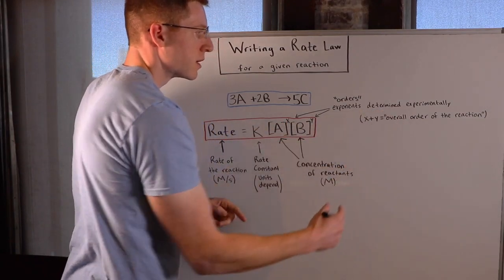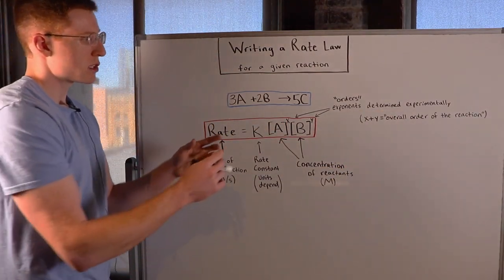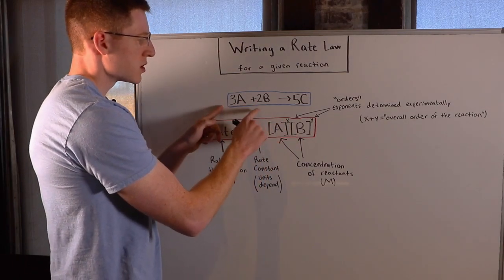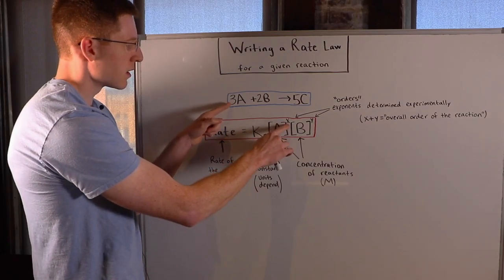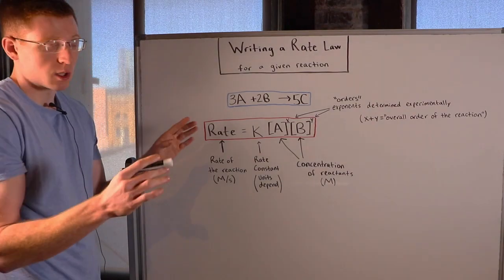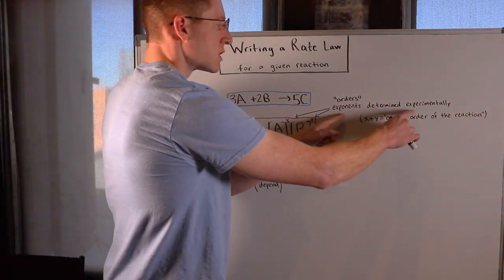And these have to be determined with experiments. So notice how they don't have anything to do with the stoichiometric coefficients here. It's a common mistake to say X is going to be 3 here, because 3 times A, and Y is going to be 2. No, you have to find X and Y with experiments.